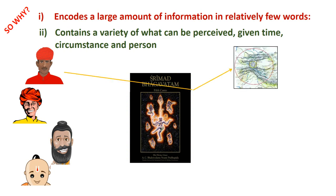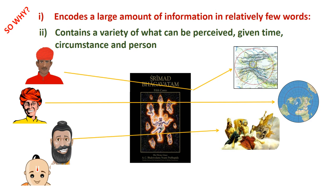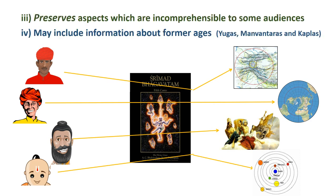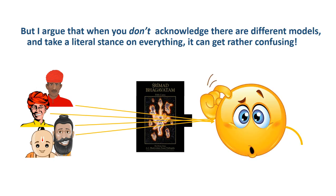For example, one person wants to see the mountains of Central Asia — topologically, that's what he gets. Another approaches the Bhagavatam with interest in geography and planispheres — he gets that. A yogi interested in the demigods sees that. An expert in astronomy gets the solar system. It also preserves aspects incomprehensible to some audiences, and may contain information about former ages — former yugas, manvantaras, and kalpas. But when you don't acknowledge different models from the beginning and take a literal stance on everything, it can be rather confusing.